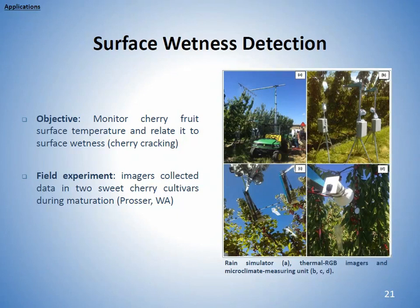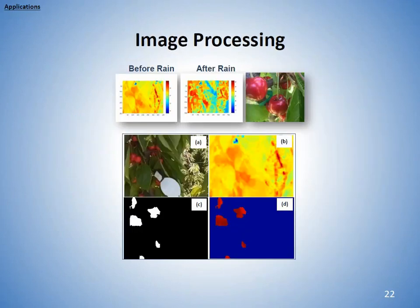Another ongoing project is investigating whether we can use surface temperature as a surrogate for wetness. Cherry cracking is a source of fruit loss in the cherry industry. We again installed imagers in cherry orchards to collect surface temperature data and see if we could relate it to wetness. We can see the change in the pattern in the thermal image before and after rain. What we did was separating the cherries from the background and calculating their temperature.